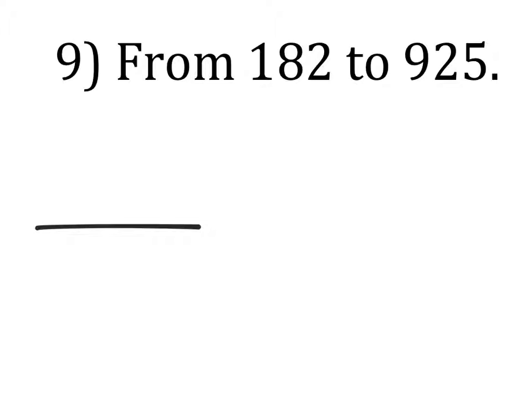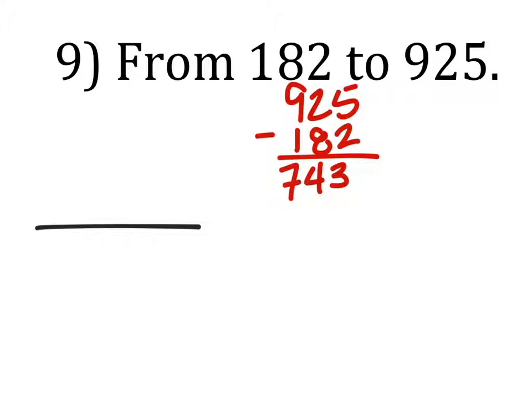So how much did this one change? It looks like, so if I do 925 minus 182, I can find the change, which is 743. That's our change. So that's the numerator.